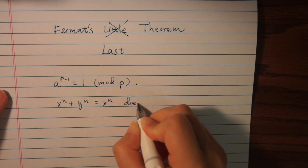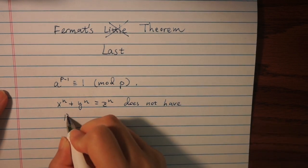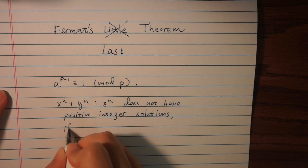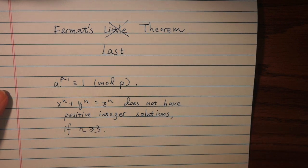However, Fermat's last theorem says there are no positive integer solutions to the equation x to the n plus y to the n equals z to the n if n is greater than or equal to 3.